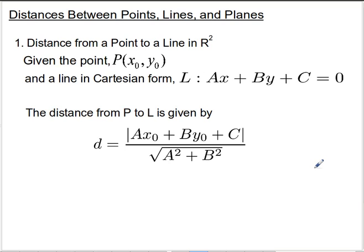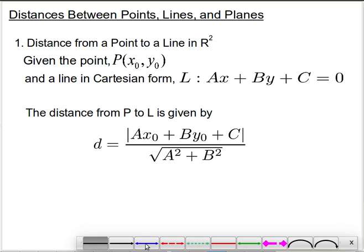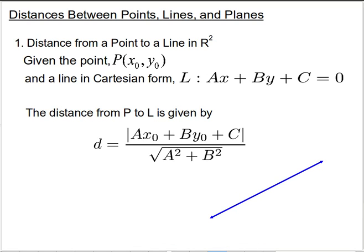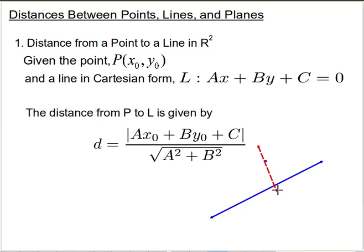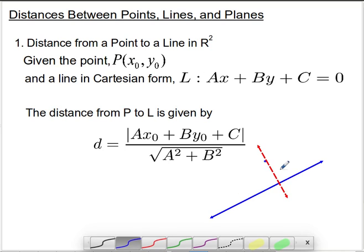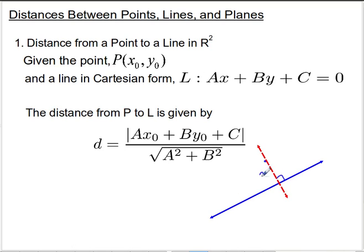For example, the distance from a point to a line in R2. So if I have a straight line and I have a point, the distance from that point to that line is going to be along this perpendicular line. So we're going to be interested in that distance from there to there.